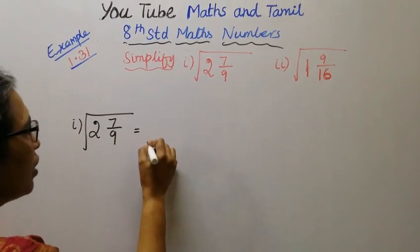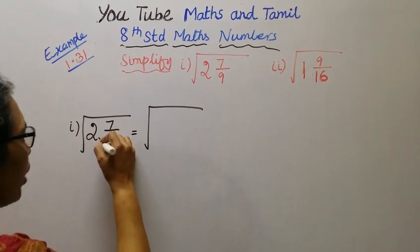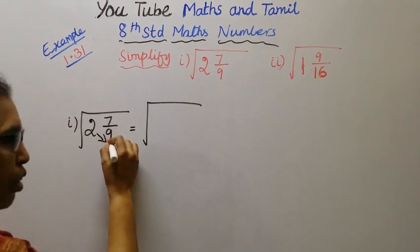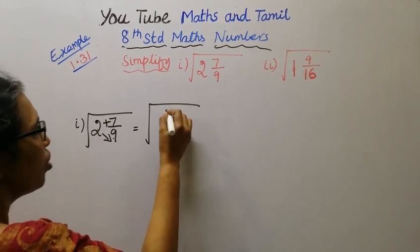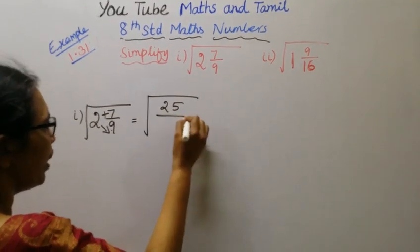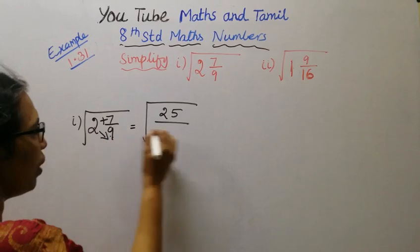That is square root of 2 and 7/9. 2 into 9 is 18, 18 plus 7 is 25. 25 divided by, the denominator is 9.